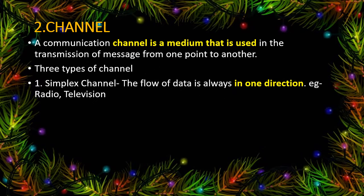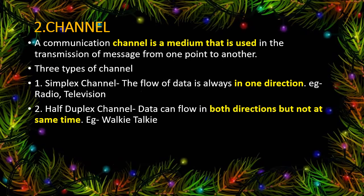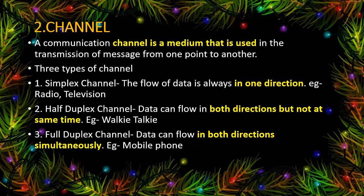There are three types of channels. Simplex channel means data flows in only one direction — examples are radio and television. Half-duplex means data is transferred in both directions but not at the same time — example is walkie-talkie. Full-duplex channel means data flows in both directions simultaneously.